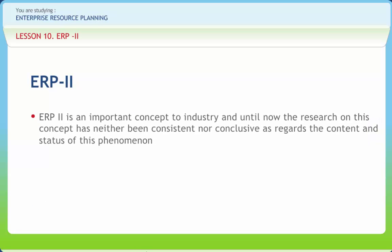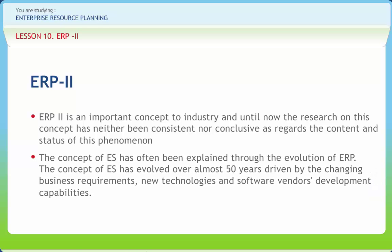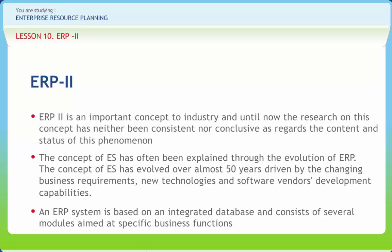ERP-2 is an important concept to industry, and until now the research on this concept has neither been consistent nor conclusive as regards the content and status of this phenomena. The ERP-2 concept will be approached by evaluating the development of ERP packages and the emerging business requirements. The concept of enterprise systems has evolved over almost 50 years, driven by changing business requirements, new technologies, and software vendor development capabilities. ERP is a standardized software package designed to integrate the internal value chain of an enterprise, based on an integrated database and consisting of several modules aimed at specific business functions.